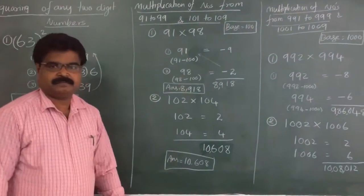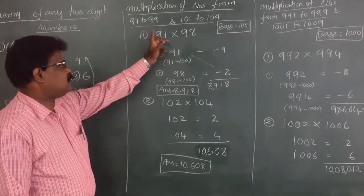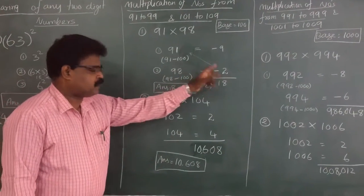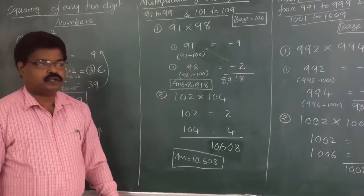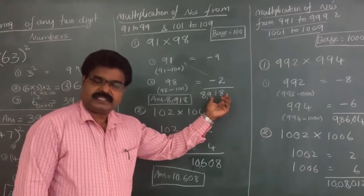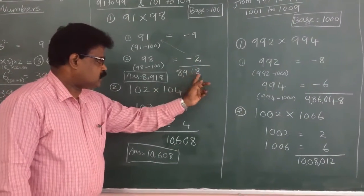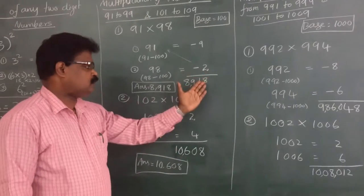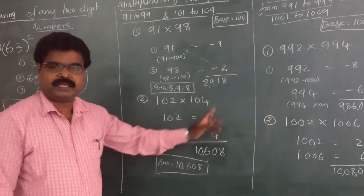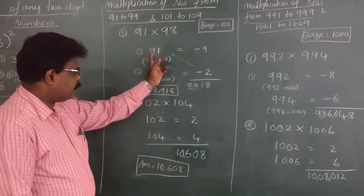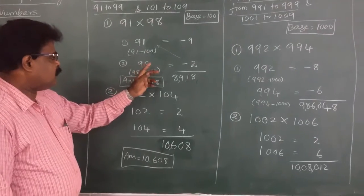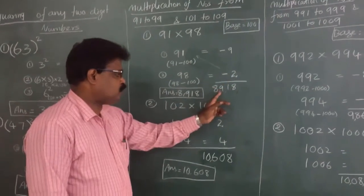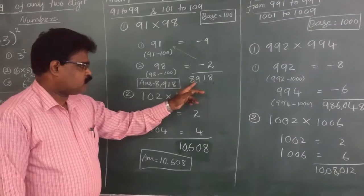First example: 91 into 98. Subtract the base from each number — 91 minus 100 equals minus 9, and 98 minus 100 equals minus 2. Multiply the differences: 9 into 2 equals 18. Since the base is 100, this product must have 2 digits — 18 already has 2 digits, so write 18. Then cross-add: 91 plus minus 2 equals 89. The final answer is 8,918.